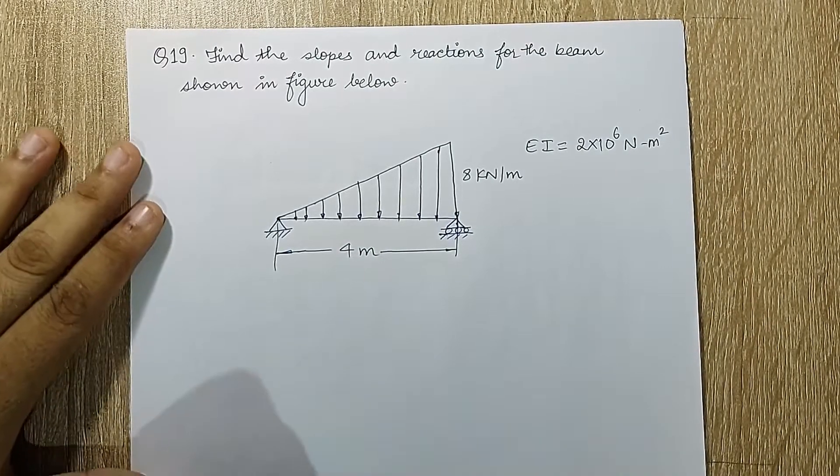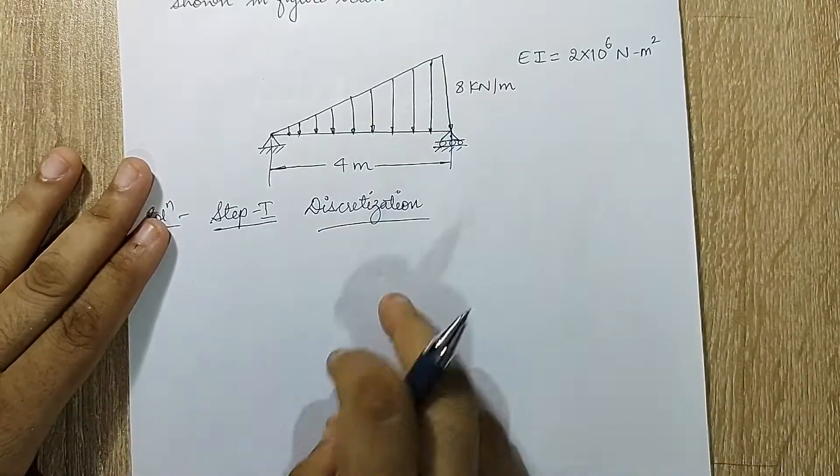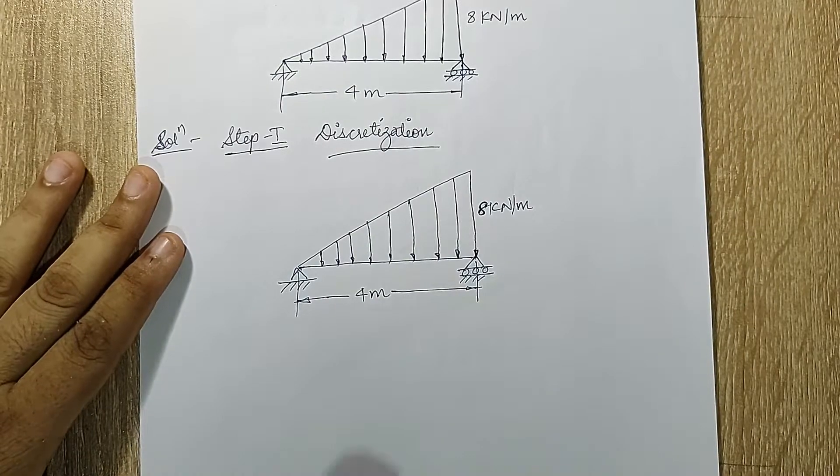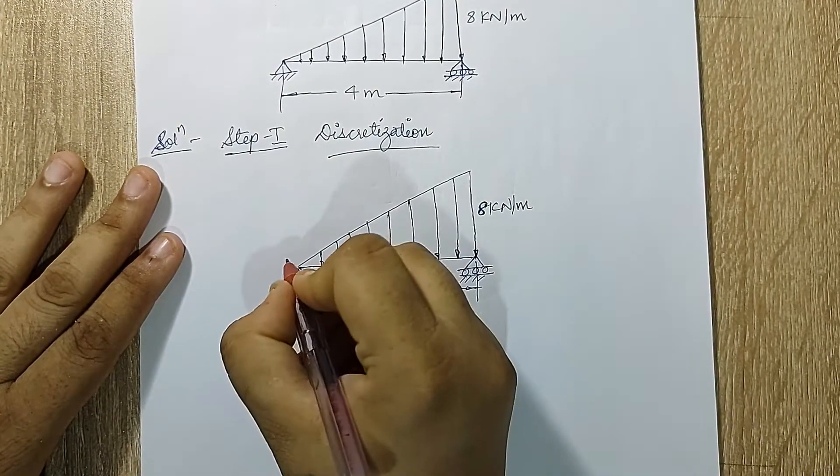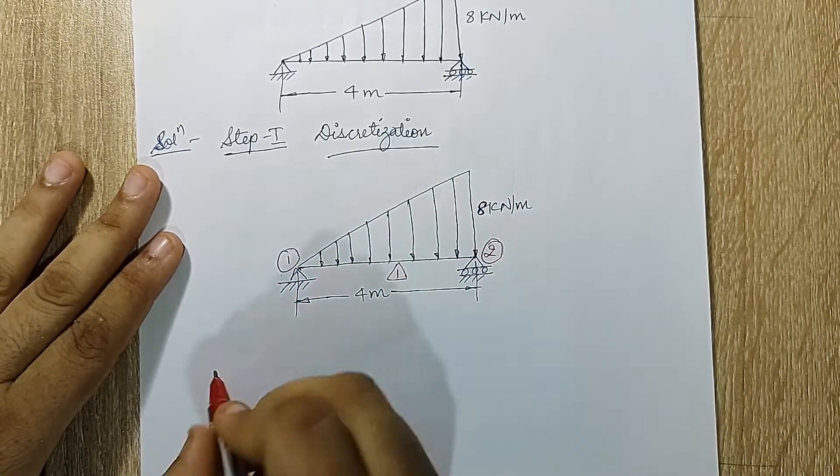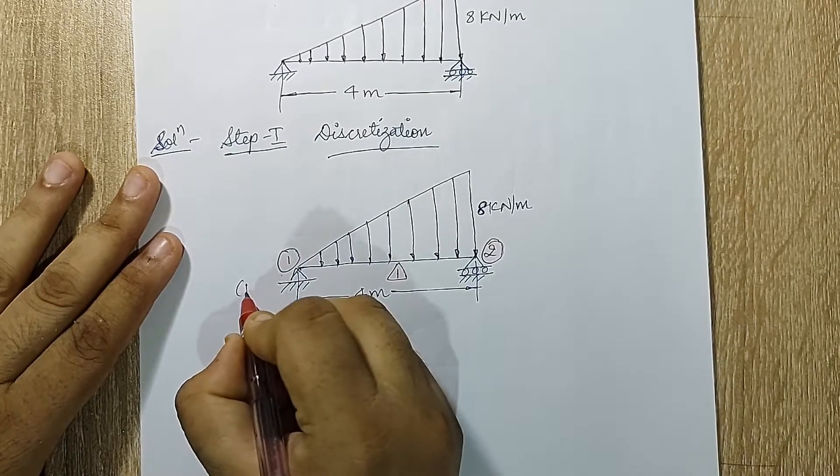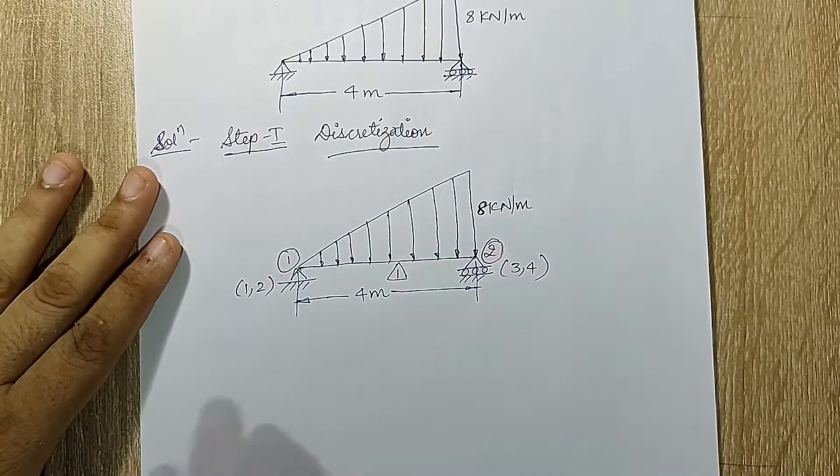Now let's get started. My step 1 is discretization. I draw this beam here and I'll mark the nodes and elements. If you see this diagram, I have only one element, so I'll mark here element 1. It is between node 1 and 2. Each node will have 2 degrees of freedom like in the case of UDL. So here I'll mark 1 comma 2, and here I'll mark 3 comma 4. This is all about discretization.